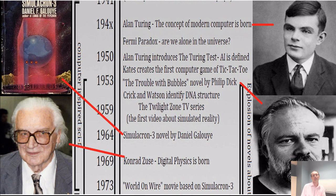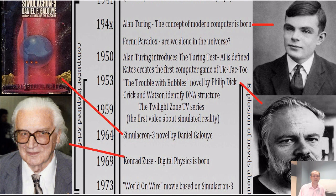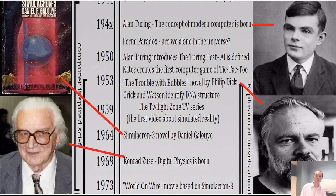Another important novel, Simulacron III, comes out in 1964. This very high-quality novel defines the concepts of a simulated world within a simulated world within a simulated world — recursive — and has many other ideas. It asks questions like: what is the meaning of life in the context of being simulated, and what does it mean to be human? Two movies are based on it: a German one — a breakthrough, low-quality movie — and later the 13th Floor, which I would say is also based on this novel.